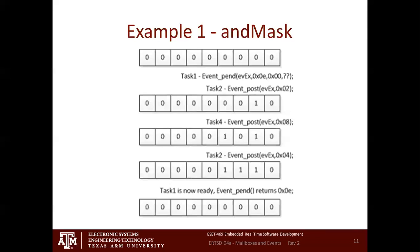Task two is pending with an AND mask of 0xE, so all the bits of 0xE have to be set for it to stop pending. Task two posts 0x2 — that sets that bit. Task four posts 0x8 — that bit. We're still pending. Task two posts 0x4. Now all those bits are set, so task one is ready. The return code from this event pend call is 0xE — the bits that are set. When it does this, the bits in that mask are automatically cleared out. If you were to pend on it immediately again, it would pause until we get more posts.